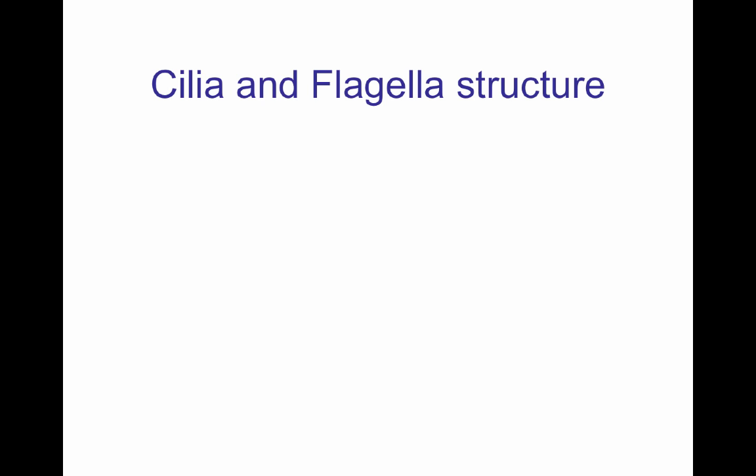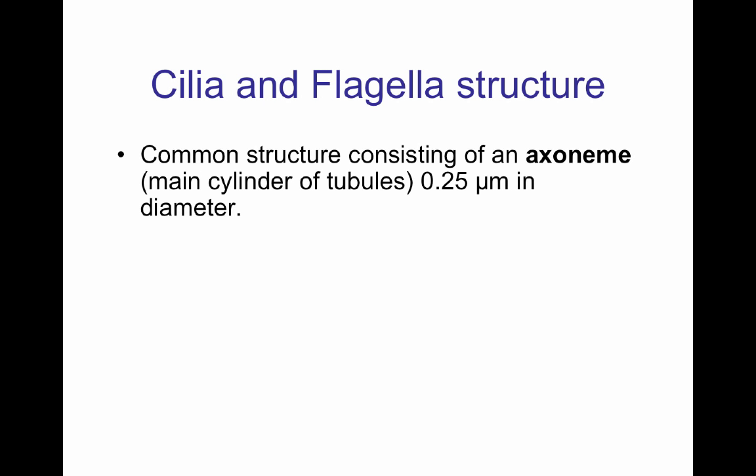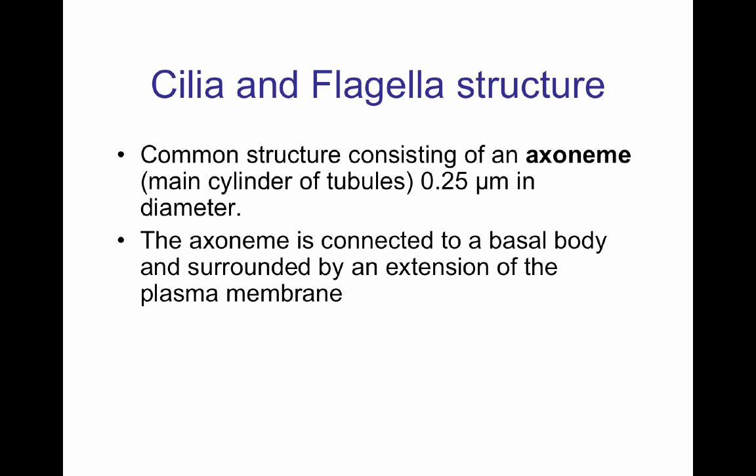Both organelles have a common structure consisting of the axoneme, which is 0.25 micrometers in diameter. The axoneme is connected to a basal body — that is the beginning of the structure. The basal body is present very close to the cytoplasm of the cell, and the entire organelle is surrounded by an extension of the plasma membrane. So it's an internal organelle, which is different from the prokaryotic flagellum.